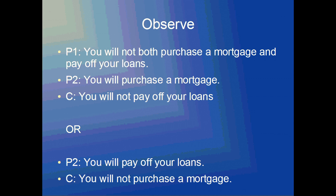Just looking at the first premise when it says you will not both purchase a mortgage and pay off your loans, there are basically at least two ways to interpret that. The first way would be that only one of those possibilities — purchasing a mortgage or paying off your loans — will occur. But the second way to interpret it by saying 'you will not both' is that neither of those possibilities could occur. Those are very different because the first says that one of them will occur, but the second interpretation says that none of them will occur.